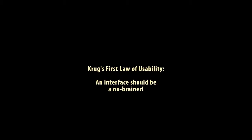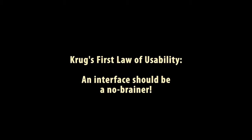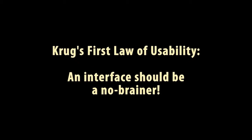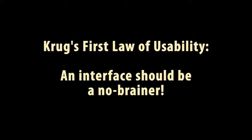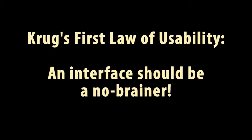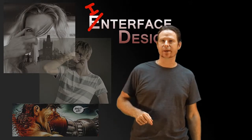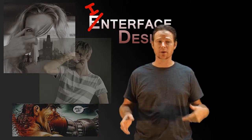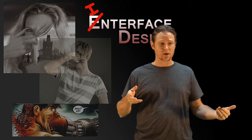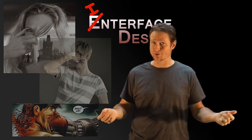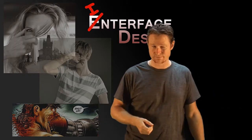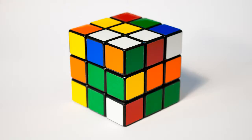Krug's first law of usability implies the need for an interface to not cause the user to have to think. For example, with a web page, it should be self-evident, obvious, and self-explanatory. However, in certain cases, an interface is designed with a mind to make the user think — such as with puzzles, games, or even an artwork.